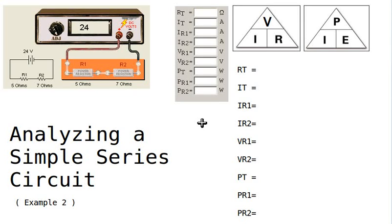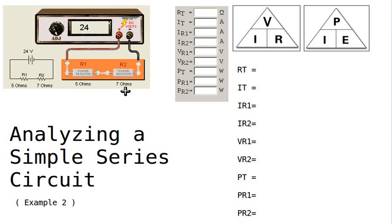Here we have another series circuit similar to the first one, but this one has two different resistors not of the same value. We have a 5 ohm resistor and a 7 ohm resistor connected in series, connected to a power supply which puts out 24 volts DC.